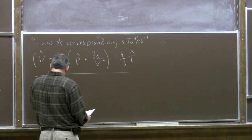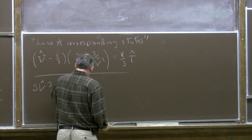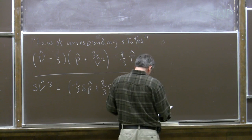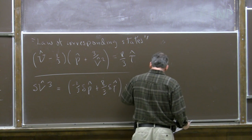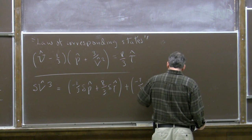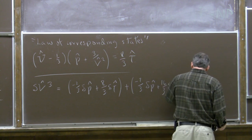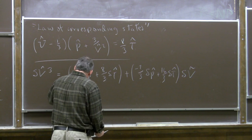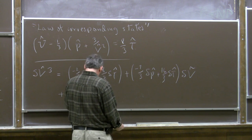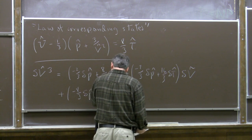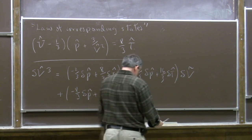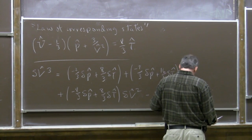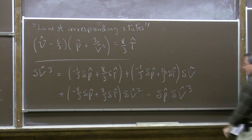The cubic equation, with no further approximation, is: delta-V-hat cubed equals minus two-thirds delta-P-hat plus eight-thirds delta-tau-hat (the constant term), plus (minus seven-thirds delta-P-hat plus sixteen-thirds delta-tau-hat) times delta-V-hat (the linear term), plus (minus eight-thirds delta-P-hat plus eight-thirds delta-tau-hat) times delta-V-hat squared, minus delta-P-hat times delta-V-hat cubed.